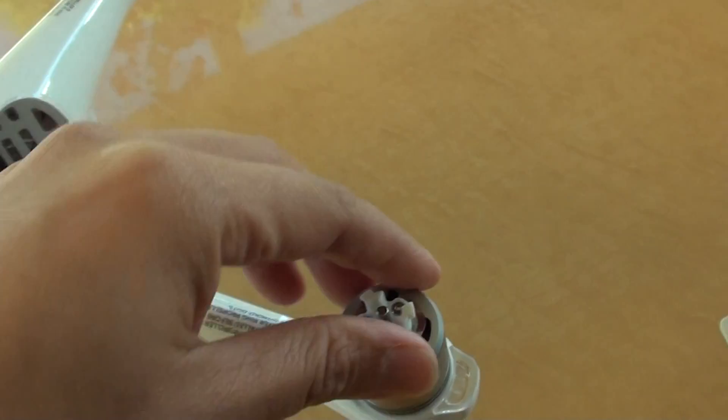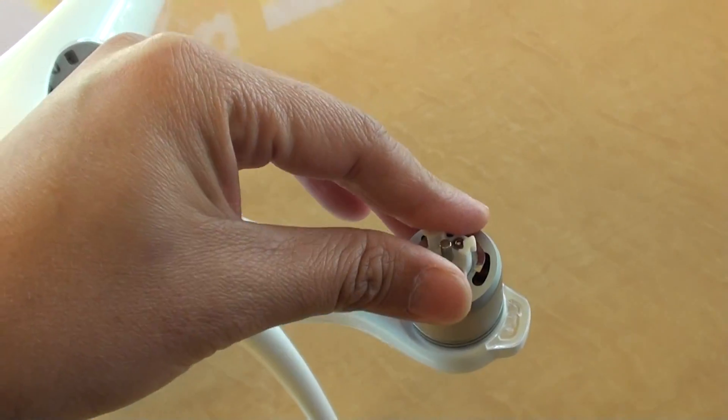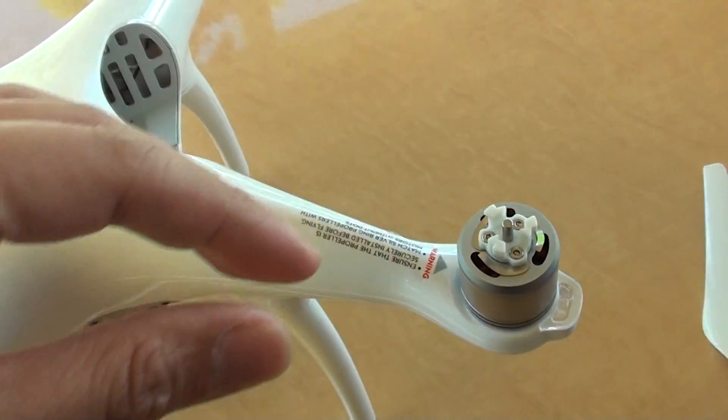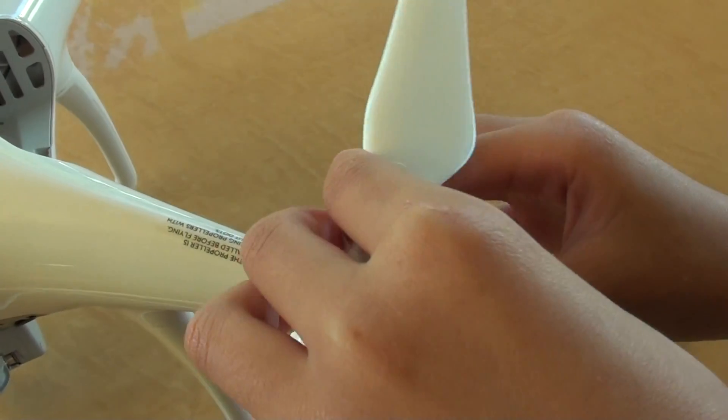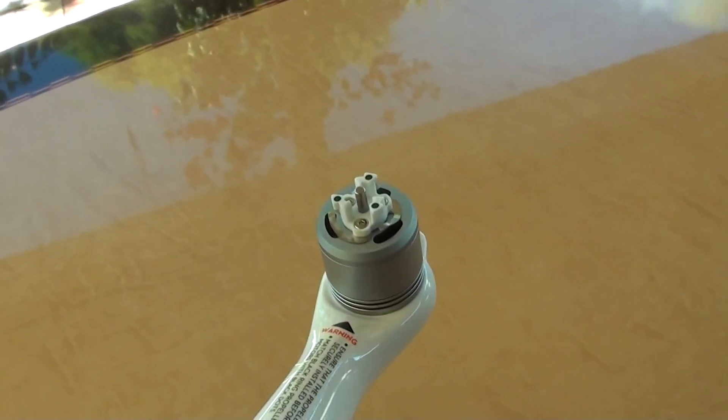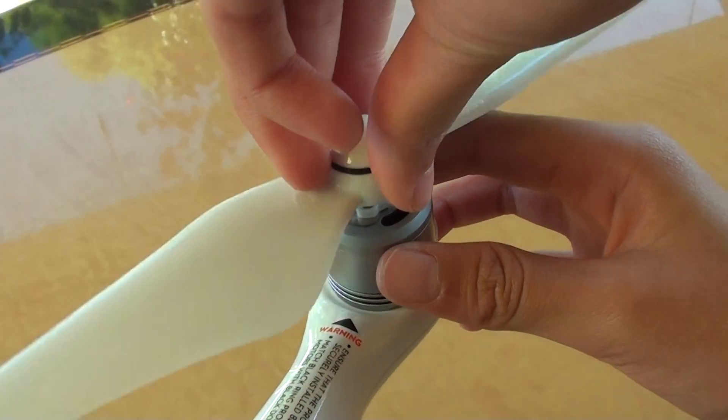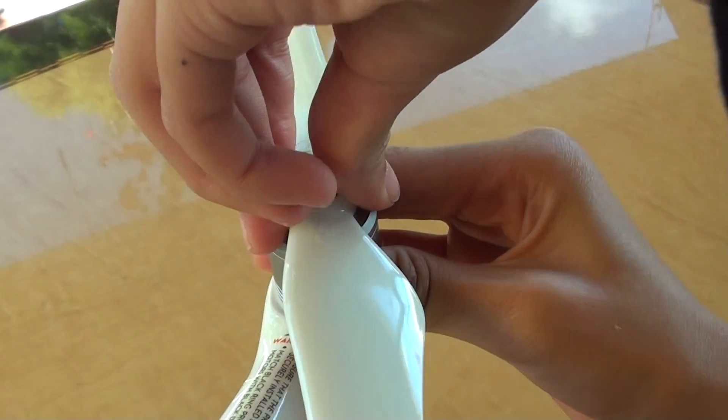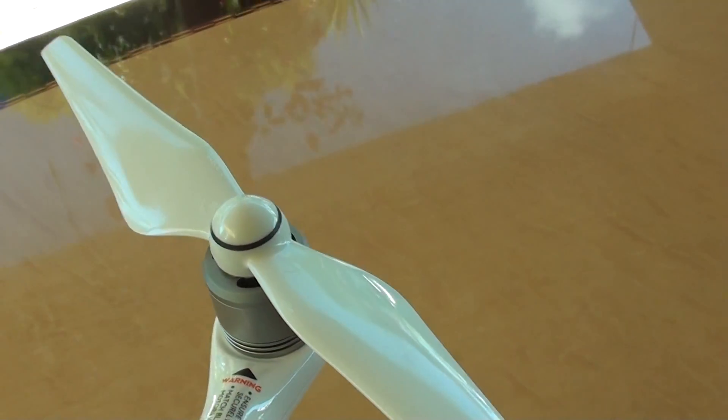Okay, let's do both of them. So let's put in the white one, okay. And here is the black one with a black dot. The black ring goes into the black dot on the motor, and that's it.